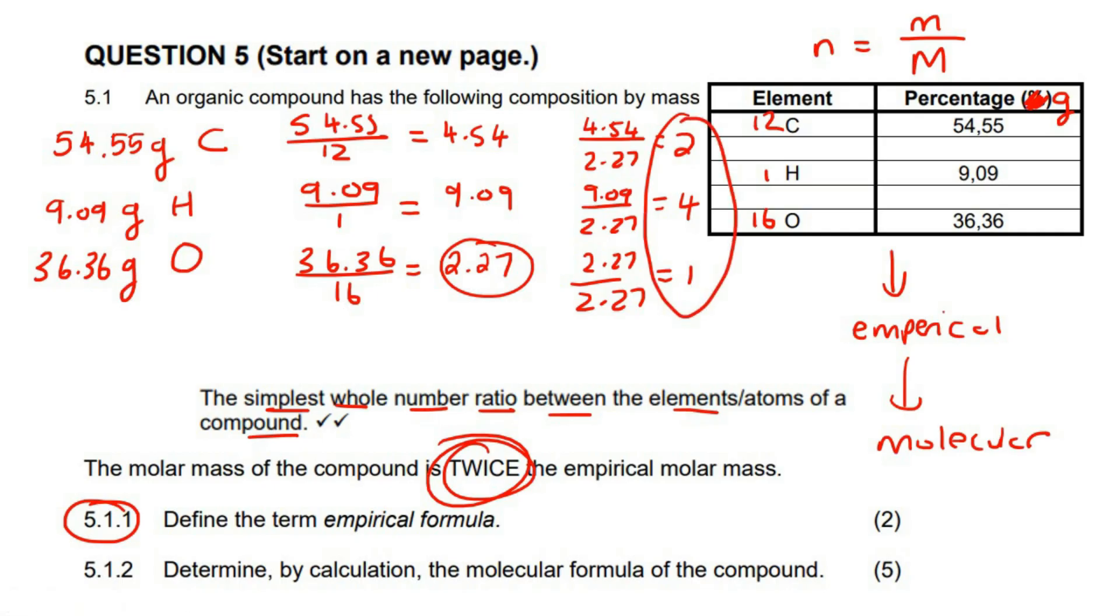So what it means is that we are going to have C2H4O. That is the empirical formula. That is your empirical.